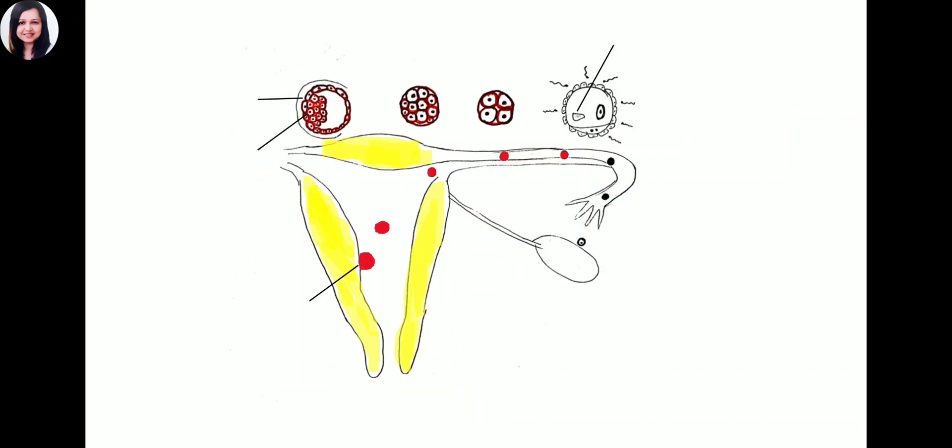Now coming to implantation. The zygote that is formed will be implanted. The head of the sperm and the ovum combine together to form a zygote which has half the chromosomes from the ovum and the rest half from the victorious sperm.